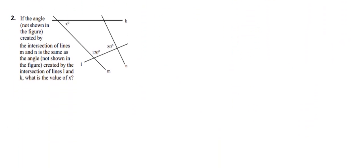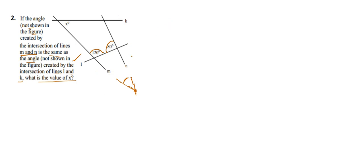Let's move on to question number 2. Question 2 says: if the angle not shown in the figure, created by the intersection of two lines M and N, is the same as the angle created by the intersection of lines L and K, what is the value of X? We have been given angles of 120 degrees and 80 degrees in the figure.